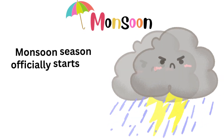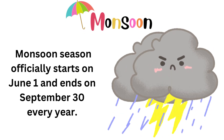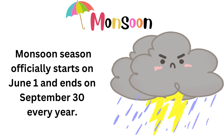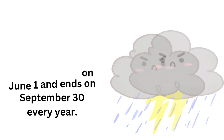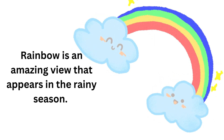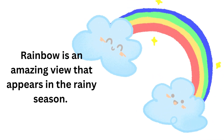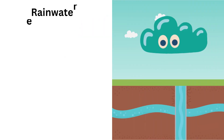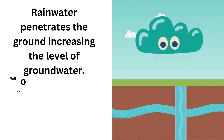Monsoon season officially starts on June 1 and ends on September 30 every year. Rainbow is an amazing view that appears in the rainy season. Rainwater penetrates the ground, increasing the level of groundwater.